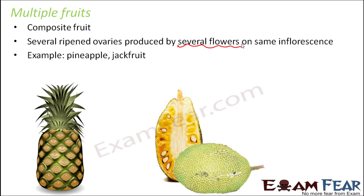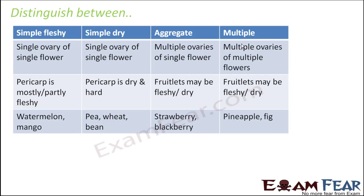A quick distinction between the four types: in simple fleshy and simple dry fruits, a single ovary is involved. In aggregate fruits, multiple ovaries of a single flower are involved. In multiple fruits, multiple ovaries of multiple flowers are involved.